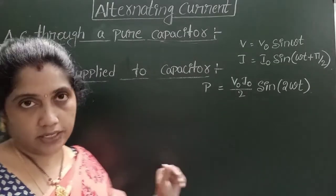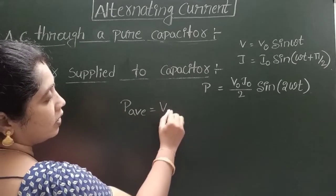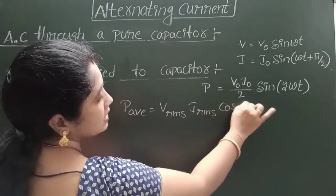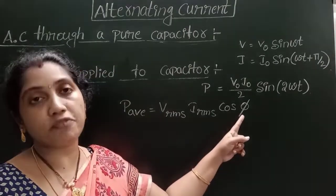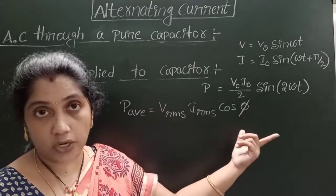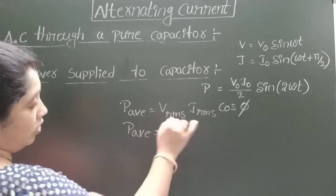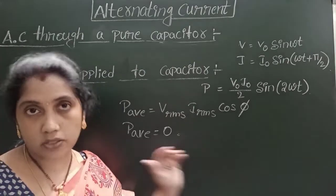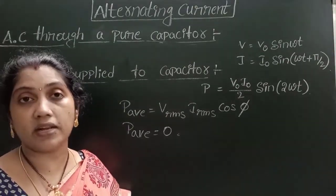The average power in the circuit is P_avg = V_RMS · I_RMS · cos φ. Since the phase difference φ = π/2, cos(π/2) = 0, so the average power is zero. This means a pure capacitor connected to an alternating source consumes zero power.